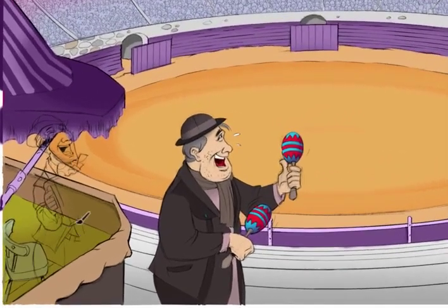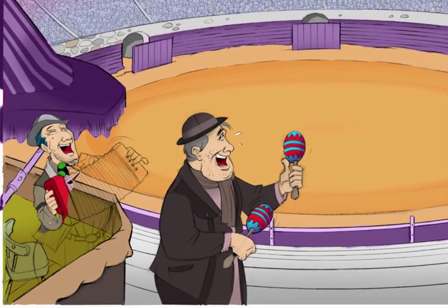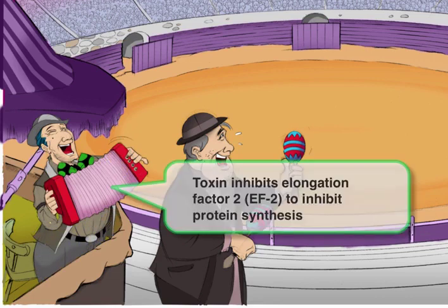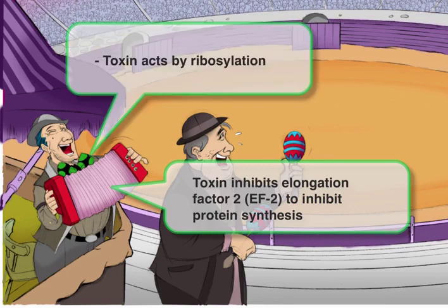We'll remember all of this by drawing a man playing the accordion in the stadium. The accordion, which can elongate, is meant to remind you of elongation factor II. We've also given him a nice big bow tie to remember ribosylation, placed right above the accordion — so ribosylation of elongation factor II inhibits protein synthesis.